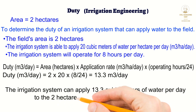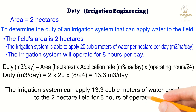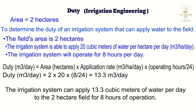It is important to note that this example assumes that the irrigation system is operating at full capacity and that there are no water losses or other factors that will affect the system's performance. It's also important to consider that the amount of water that can be applied to the field will vary depending on the crop type and water requirements, soil and weather conditions, and other factors.